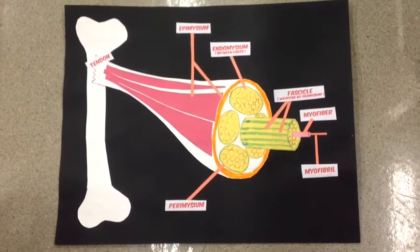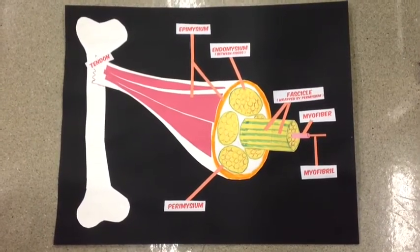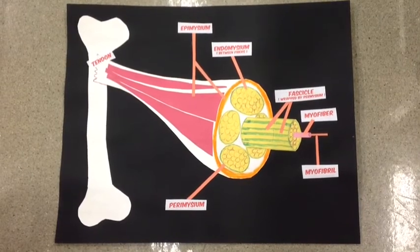Myofibrils are composed of thin and thick myofilaments and each fiber is striated. Striations are produced by the arrangements of thick and thin filaments.